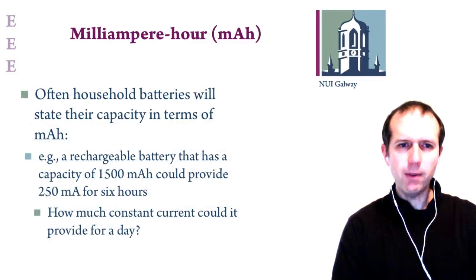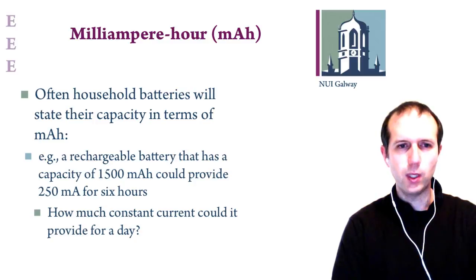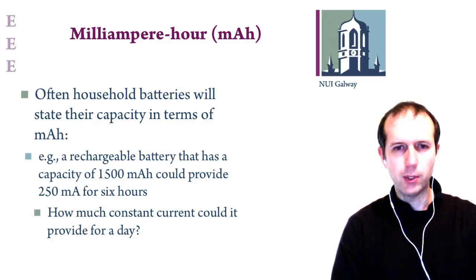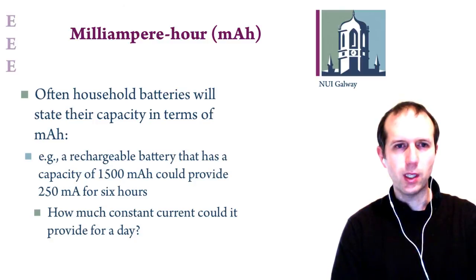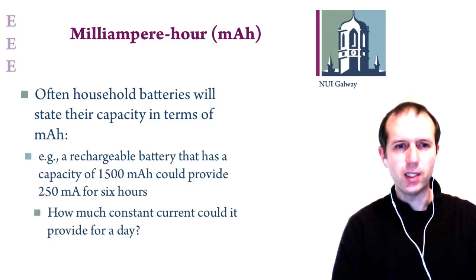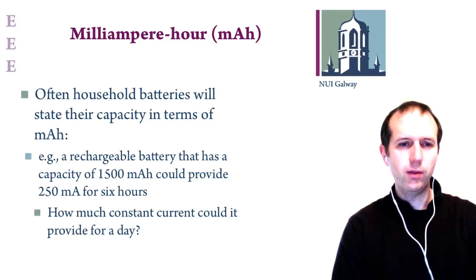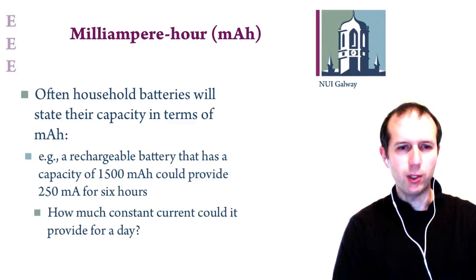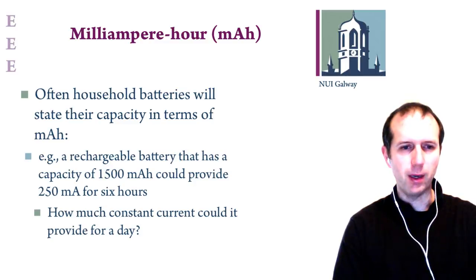Batteries in your house or in various devices will state their capacity in different terms. Some will talk about joules, but mainly the quantity called milliamp hours will be used. A milliamp hour is basically the amount of amps that a battery will provide in an hour. A typical battery you might have at home will give values such as 1200, 1500, or 1800 milliamp hours.